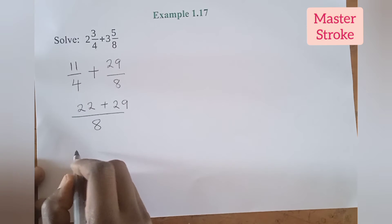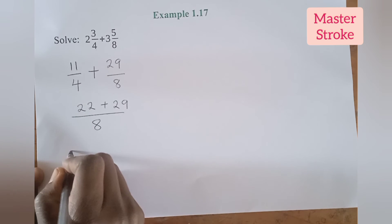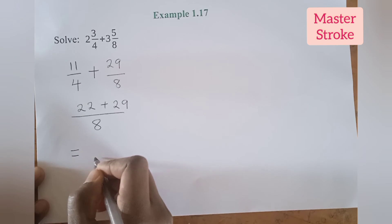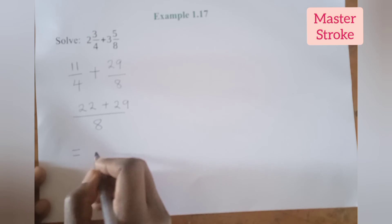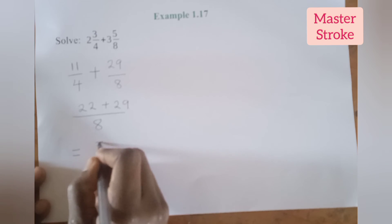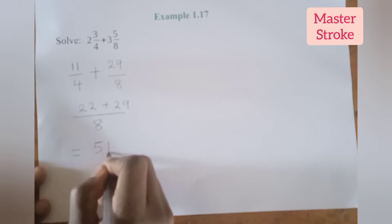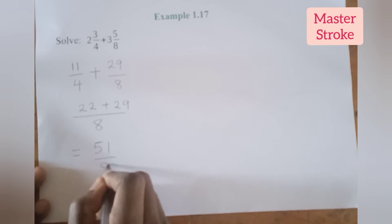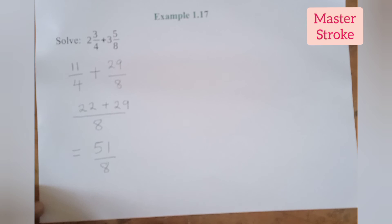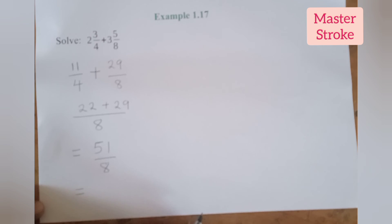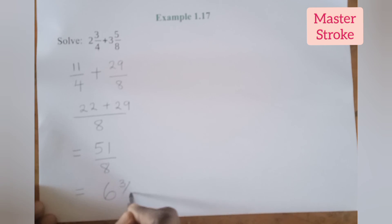So 22 plus 29 gives us 51 over 8, which is the same as 6 and 3 over 8.